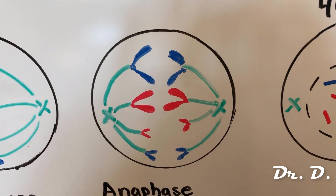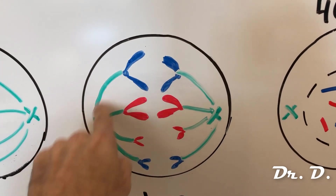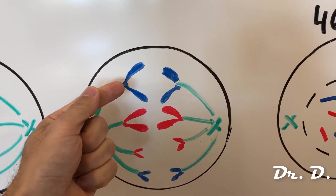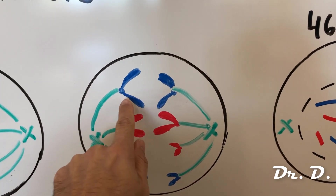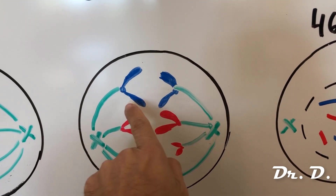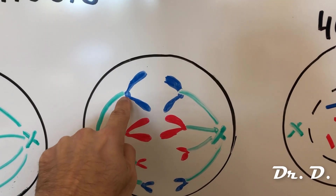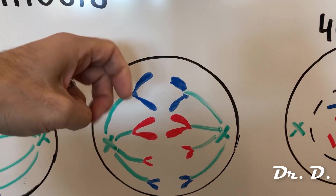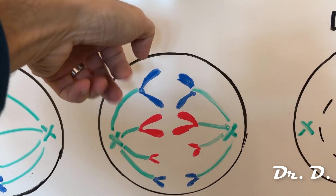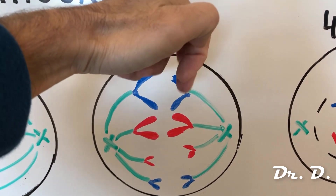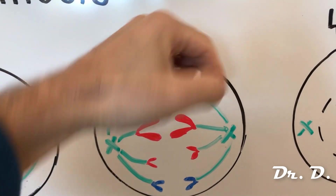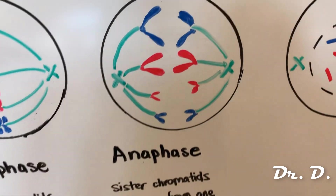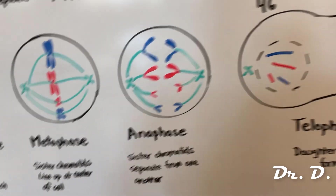The reason the sister chromatids travel apart is not because the centrosome is pulling them. The sisters themselves move to the opposite poles. The kinetochore proteins attached to the centromere have little motor molecules inside that walk along the microtubules. So the sister chromatids are actually walking themselves to the opposite poles of the cell.